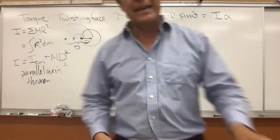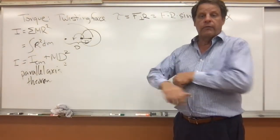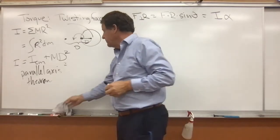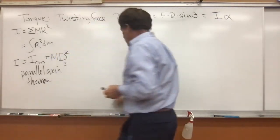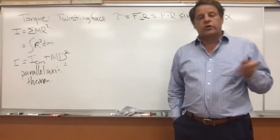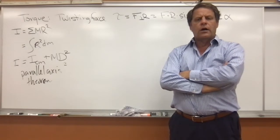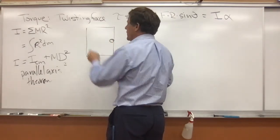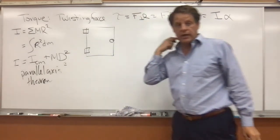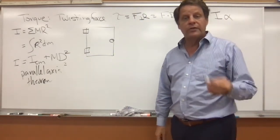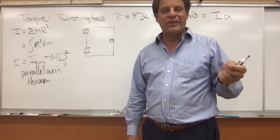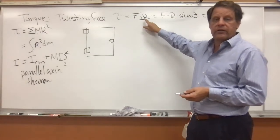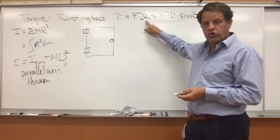The parallel axis theorem is a very handy tool that makes otherwise very tricky calculus problems much easier. For example, why are doorknobs put on the edge of the door, opposite the hinges? The answer is to increase leverage, and increasing leverage means increasing your torque. The easiest way to do that is to increase your radius.